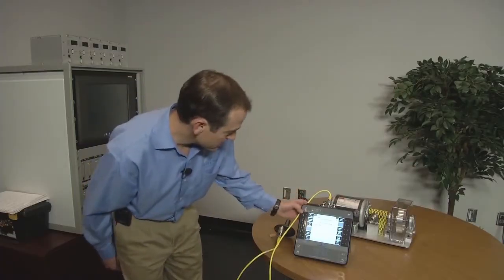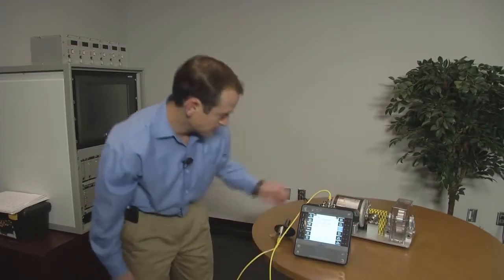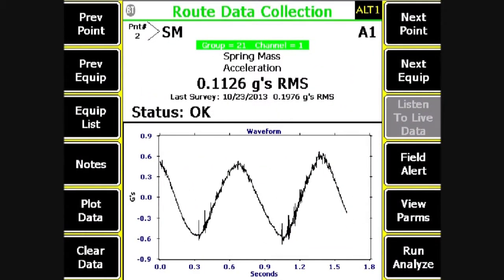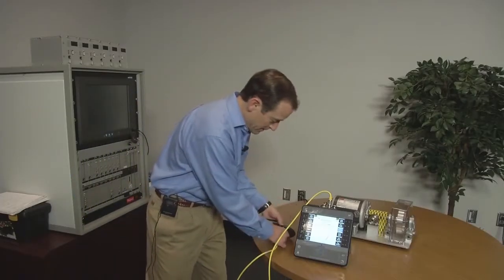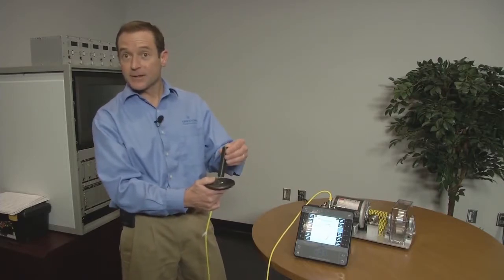The second point is acceleration. Acceleration refers to force, force on the machine. The difference on this plot is that you still see it's very sinusoidal, but you're starting to pick up actual impacts that are riding along the sine wave. And what these are caused by is the spring actually rubbing against the mass.